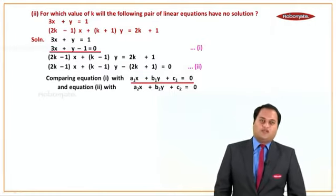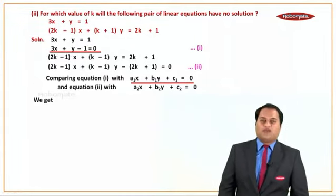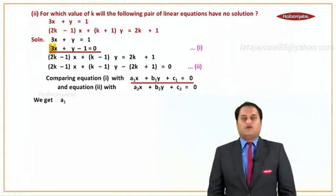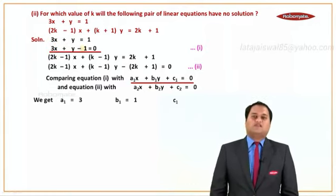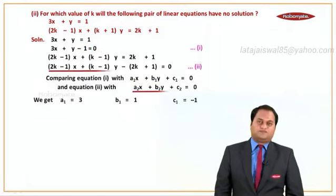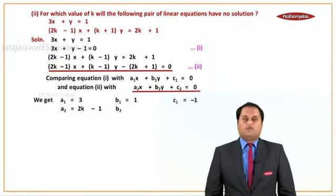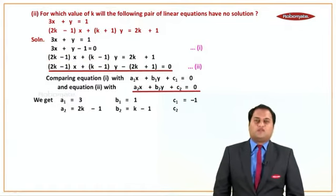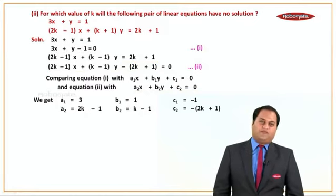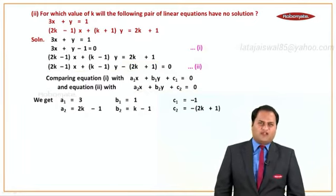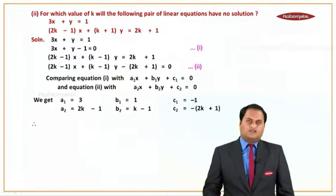Now compare with the standard form and get the values of a1, b1, c1 and a2, b2, c2. From equation 1: a1 equals 3, b1 equals 1, c1 equals minus 1. From equation 2: a2 equals 2k minus 1, b2 equals k minus 1, and c2 equals minus of 2k plus 1.